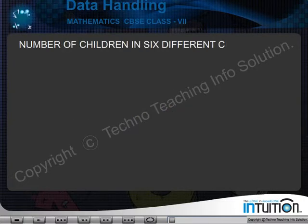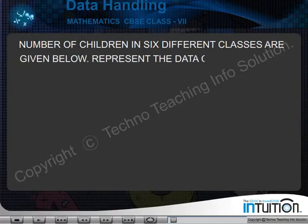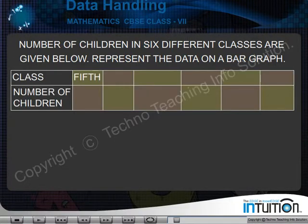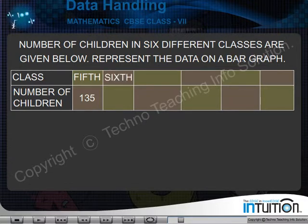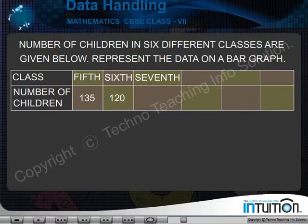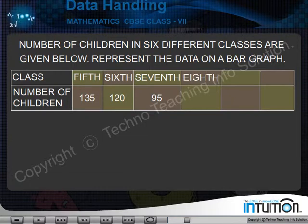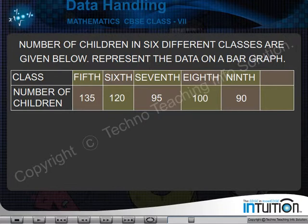The number of children in six different classes are given below. Represent the data on a bar graph. Class fifth: 135 children. Class sixth: 120 children. Class seventh: 95 children. Class eighth: 100 children. Class ninth: 90 children. Class tenth: 80 children.